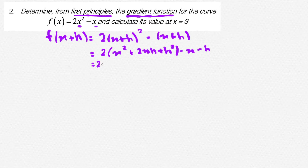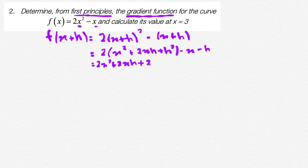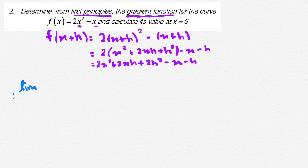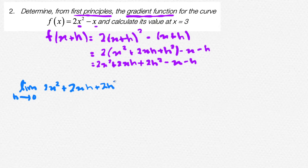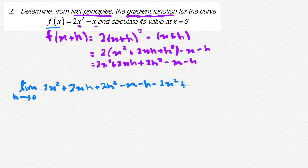Now let's continue. 2 times x squared gives 2x squared. 2 times 2xh gives 4xh, plus 2 times h squared gives 2h squared. Minus x minus h. Since we now know the value of f of x plus h and f of x, let's find the gradient function. The gradient function is the derivative of the equation. However, we cannot use simple derivatives as it says to find it using first principles. So let's sub this into our limit formula. The limit as h approaches 0 of f of x plus h, which is 2x squared plus 4xh plus 2h squared minus x minus h, minus f of x, which is 2x squared minus x. Remember, there is a minus sign in front of this, so we times it by minus.